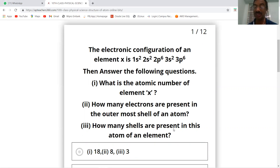How many shells are present in this atom of an element? There are 3 shells: first shell 1s2, second shell 2s2 and 2p6, third shell 3s2 and 3p6.